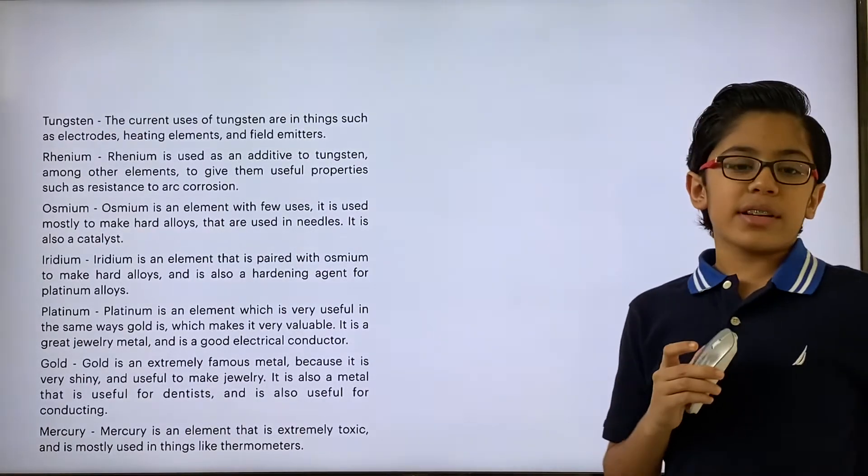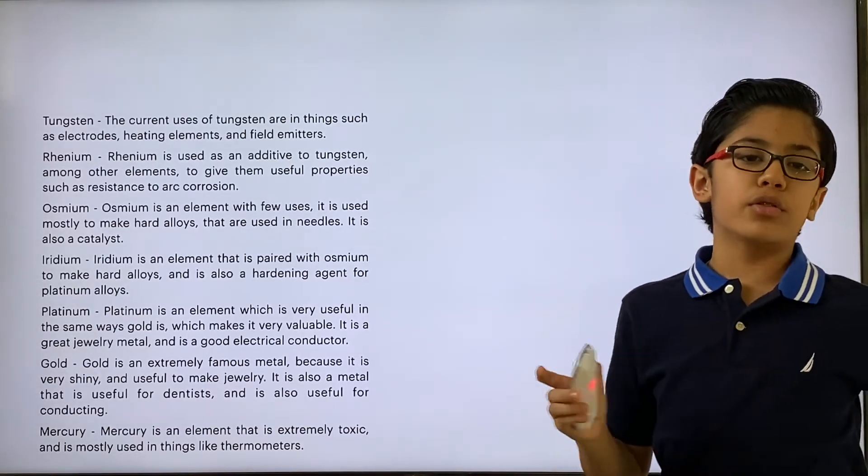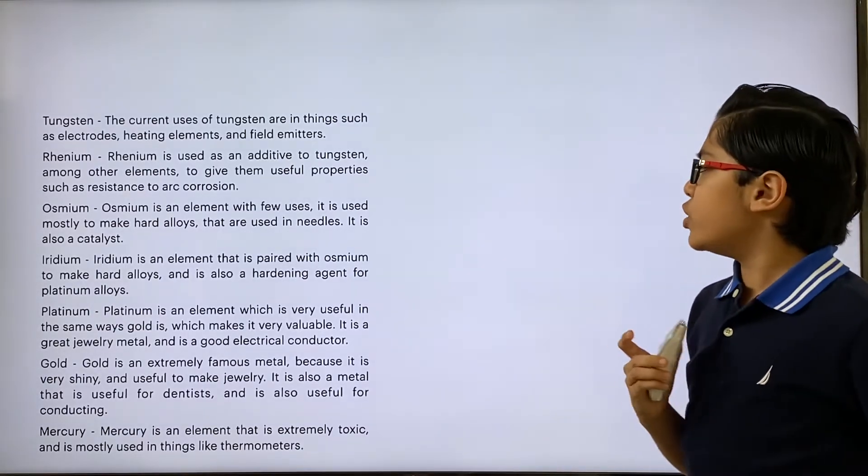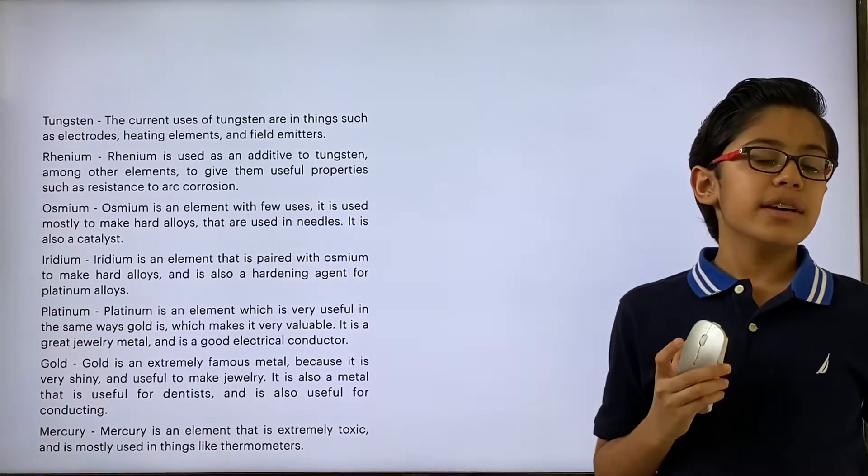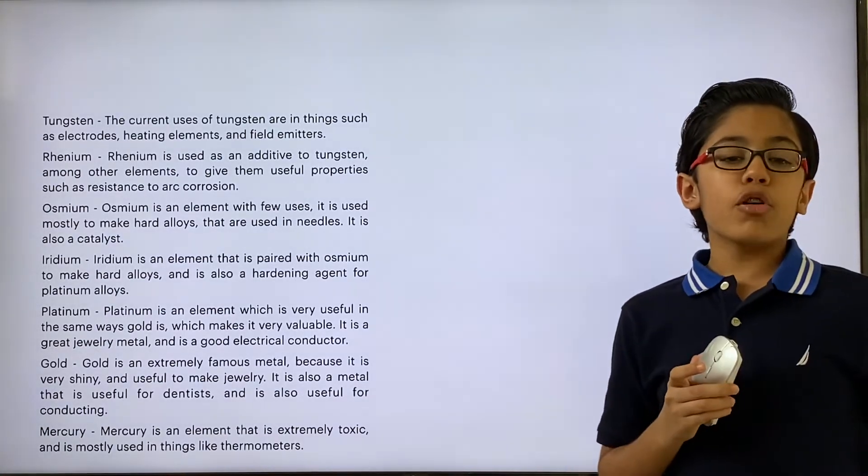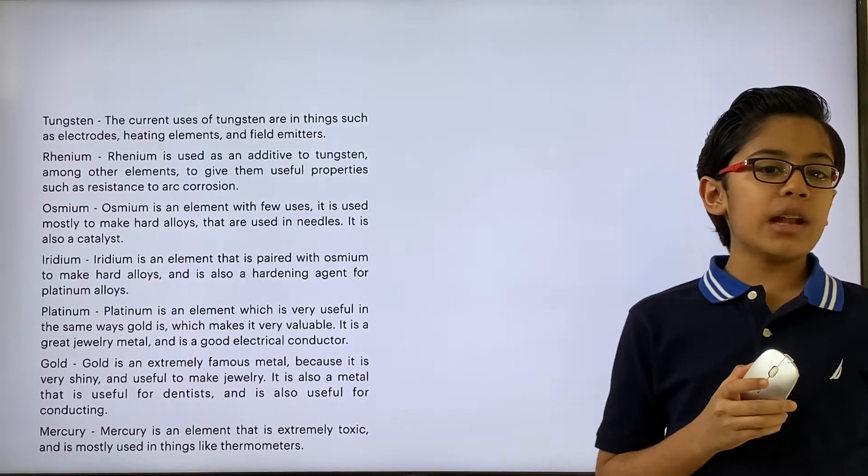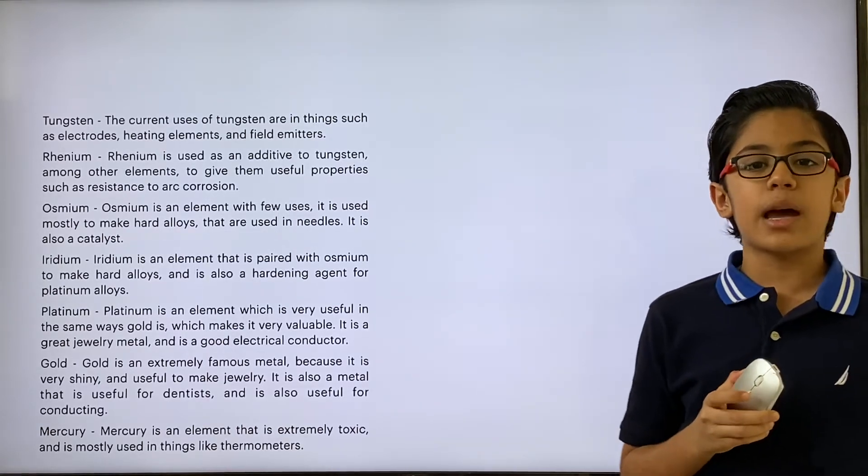Osmium is kind of like a new element that we don't know much about, so it has very few uses. It is used mostly to make hard alloys that are used in needles, and it's also used as a catalyst to speed up the chemical reaction process in the chemical industry.